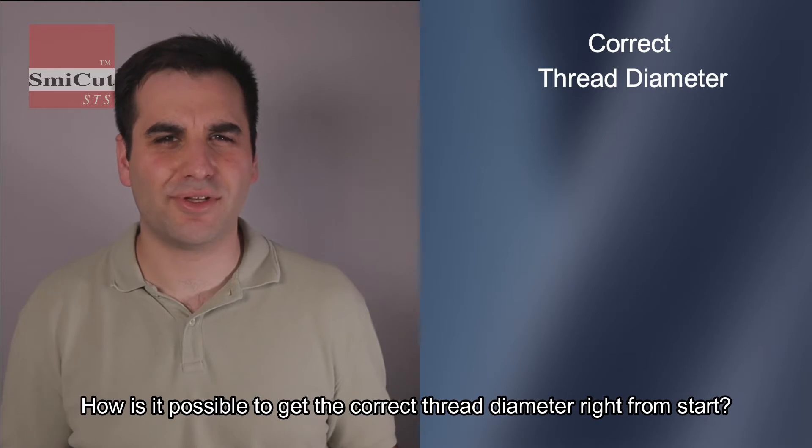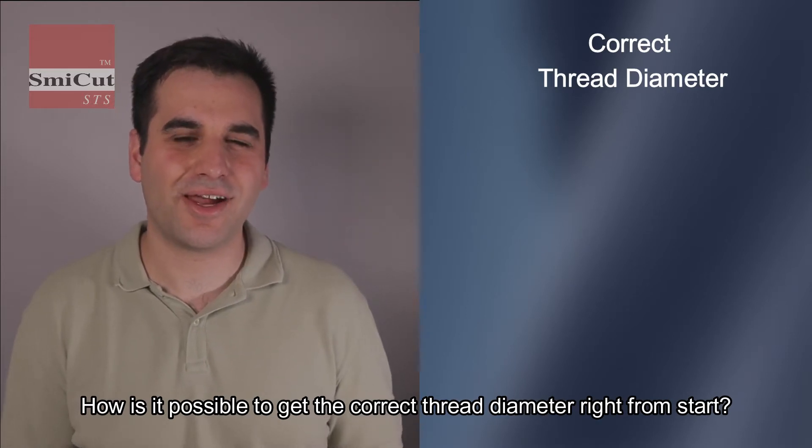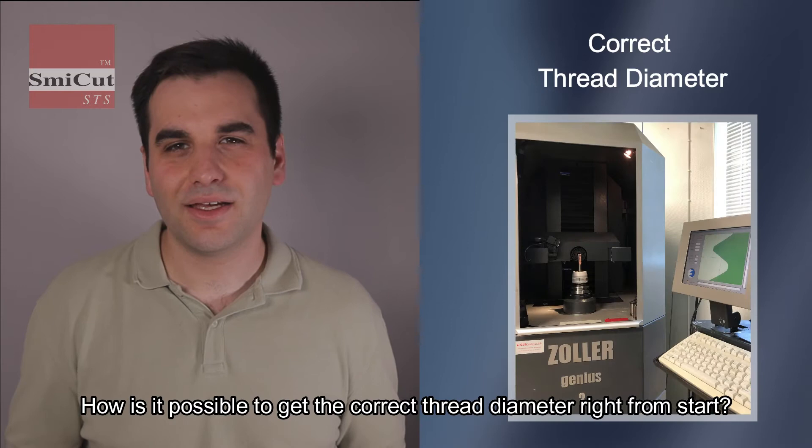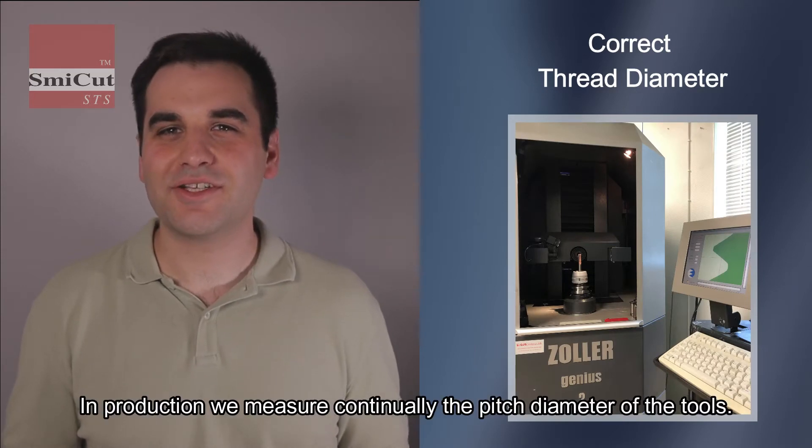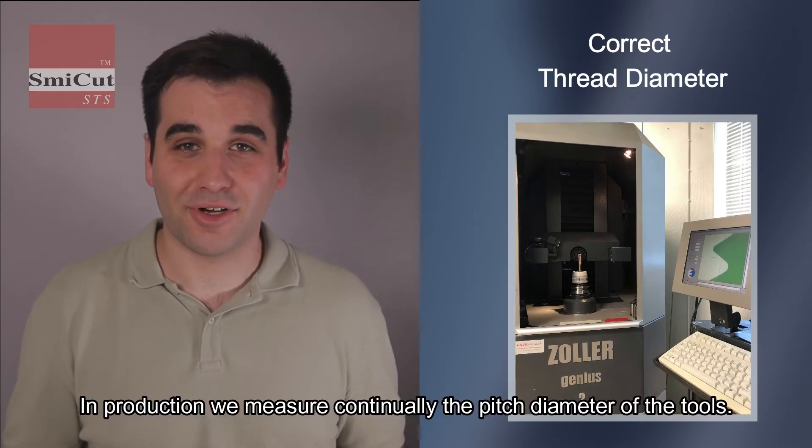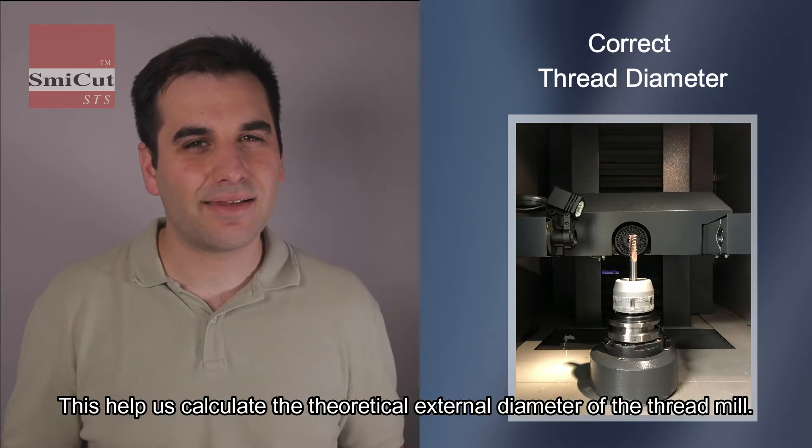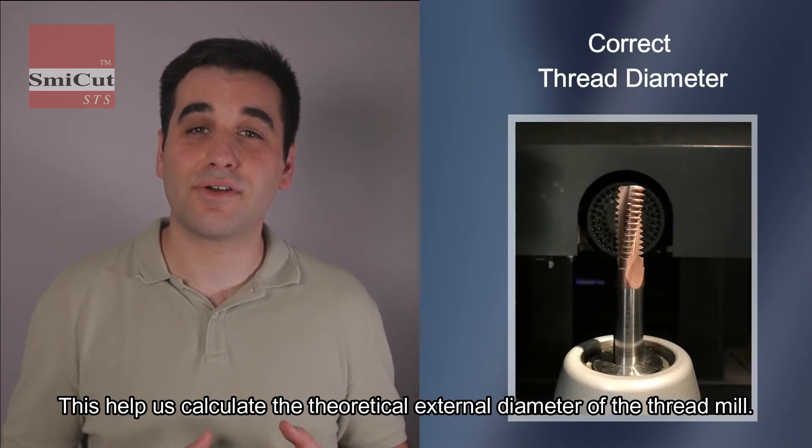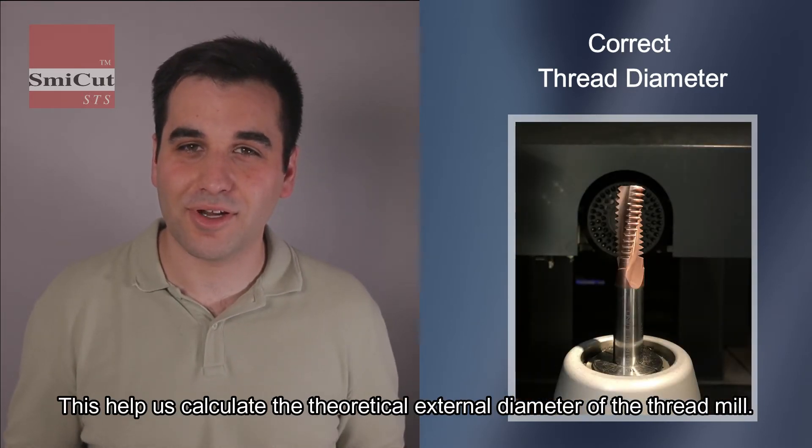How is it possible to get the correct thread diameter right from start? In production we measure continually the pitch diameter of the tools, and this helps us calculate the theoretical external diameter of the thread mill.